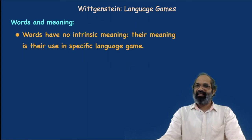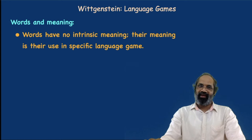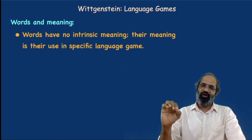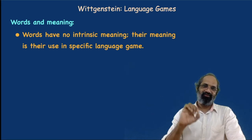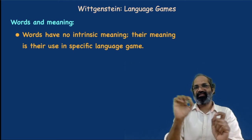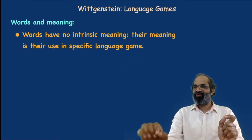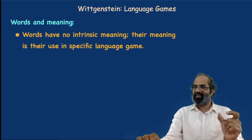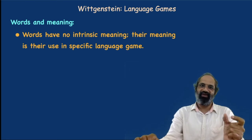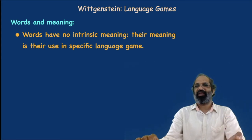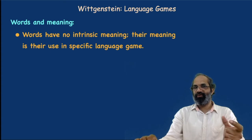Words have no intrinsic meaning; their meaning is their use in a specific language game. As far as the early philosophy is concerned, words refer to objects in the world — there is a one-to-one correspondence between the word in language and the object in the world. Such a rigid or intrinsic meaning was assigned to each and every word in the early philosophy of Wittgenstein. Now, in the later philosophy, there is no such intrinsic meaning; a specific use in context gives meaning to a word.